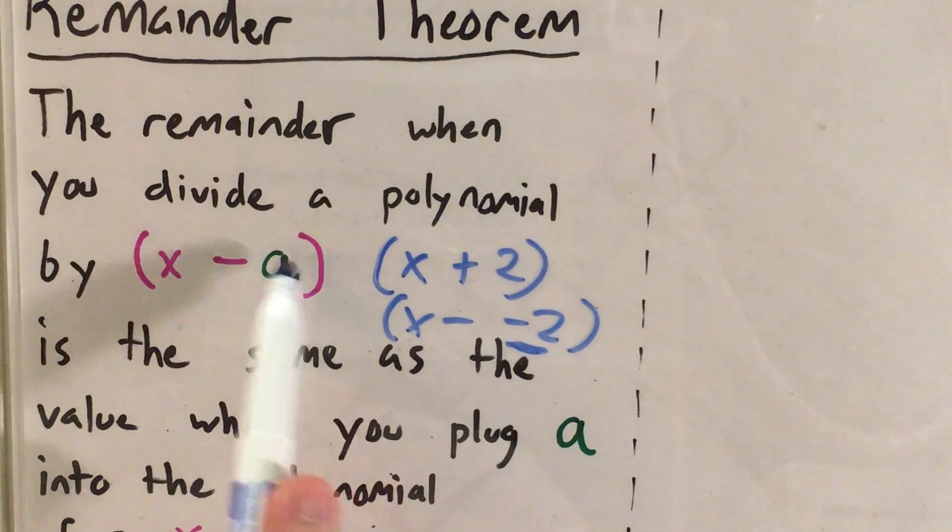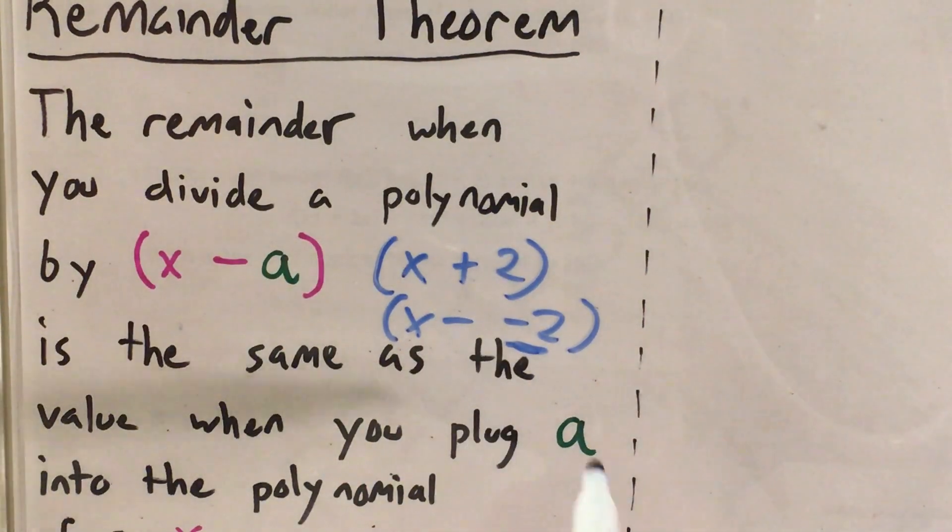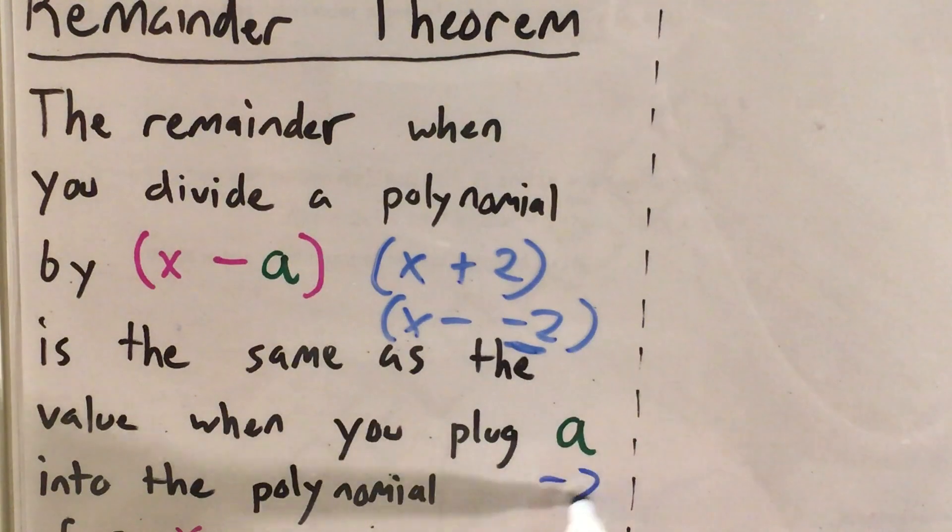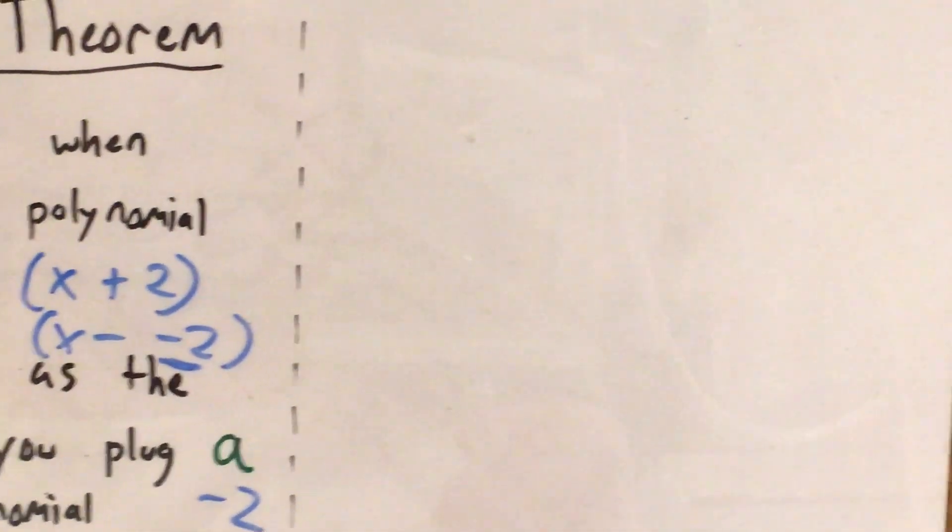The remainder when I divide any polynomial by this is going to be the same as the value when I plug a, also known as negative 2, into the polynomial for x. So I'll go ahead and do that on this side of the paper.